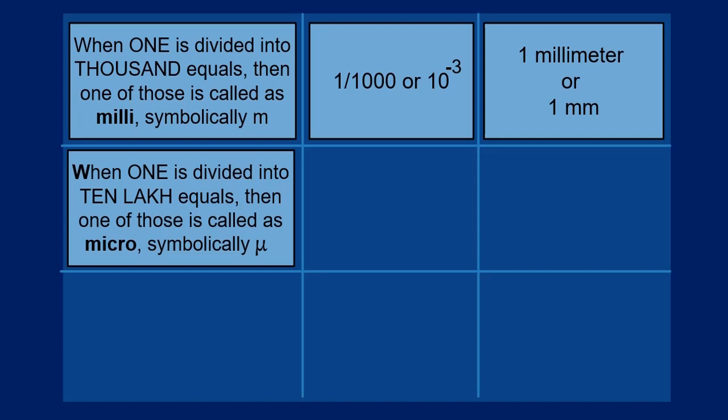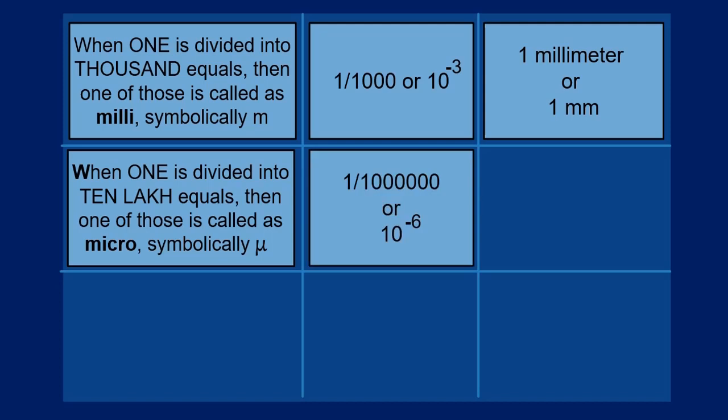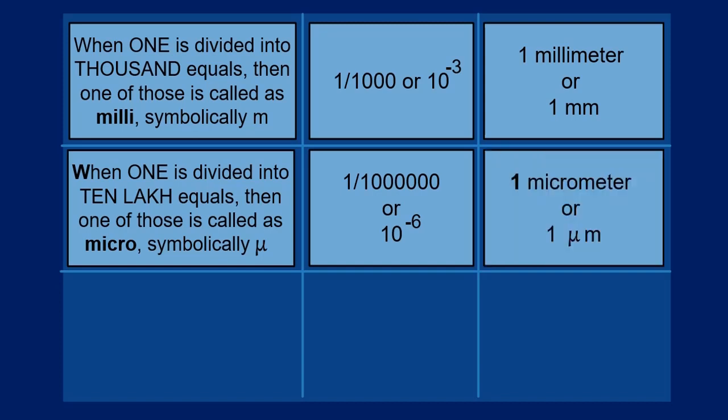When one unit is divided into 10 lakh equal units, after division, each one is called as micro, represented with mu. There are 10 lakhs of such quantities. In mathematics, symbolically, we write each of them as one divided by one followed with six zeros, or ten raised to the power of minus six. In physics, the same length is called as one micrometer, written as one followed with mu and small letter m.